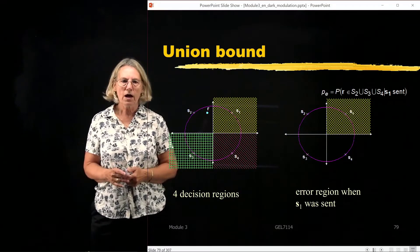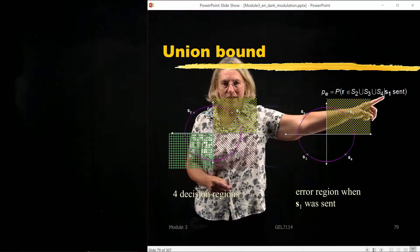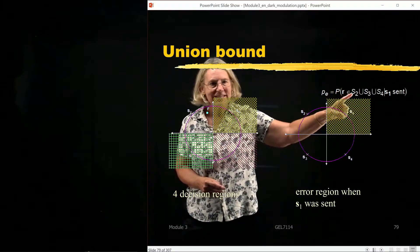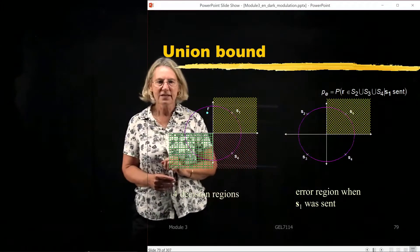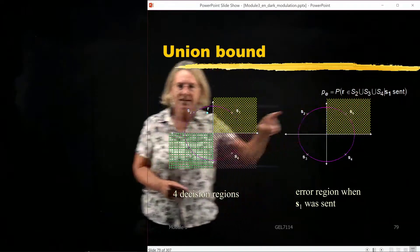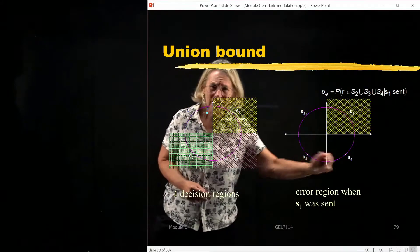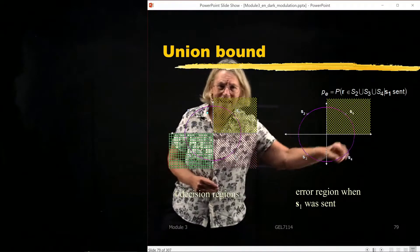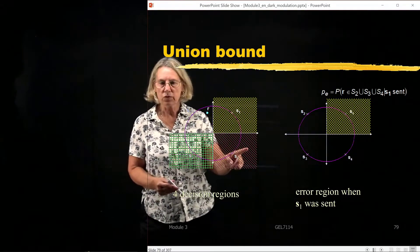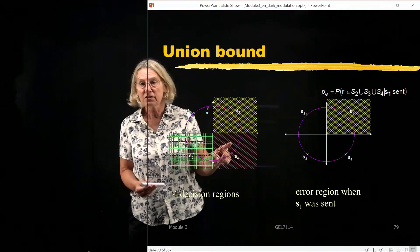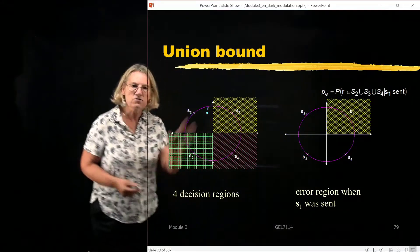When does an error occur? An error occurs — the probability of error when S1 is sent is the probability that the received vector does not fall in S1's region. Instead of falling in the desired region, it falls in this union — it either falls in S2's region, S3's region, or S4's region. So I can think of this as the union of these three regions that the vector ends up falling in instead of the true region. That's why we call it a union bound, because we're looking at the probability that the received vector falls somewhere in that union.